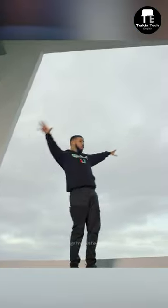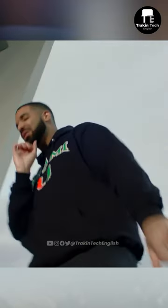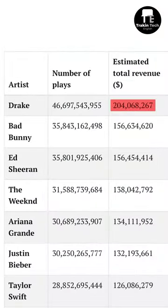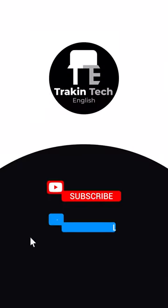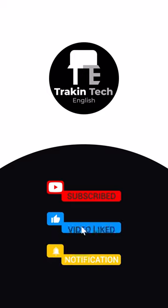And do you know how much Drake made? He has the maximum number of streams on Spotify — close to $204 million from his 46 billion streams. For more such cool revelations, don't forget to hit the subscribe button on Track and Tech English.